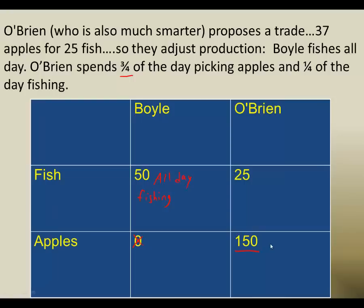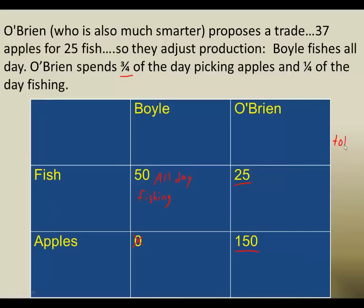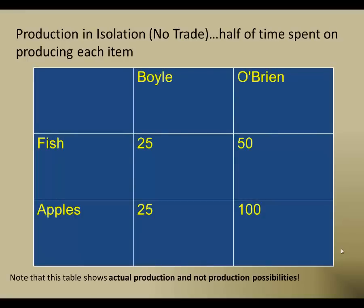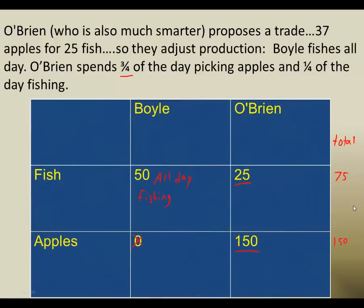His remaining time — one quarter of the day — he's going to fish. In a full day he can catch 100 fish, so with only one quarter of the day he can catch 25 fish. So now these are our production numbers. Our total number of fish — if we do a total — we find that now we have 75 total fish and 150 apples. If we go back a slide, we find that we had 75 total fish and 125 apples. So we've kept the same number of fish, but now we're making more apples.